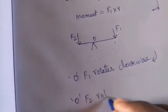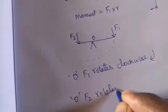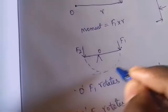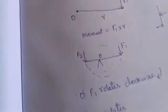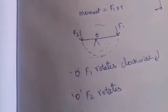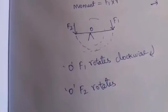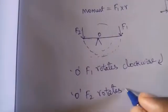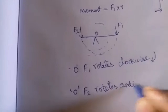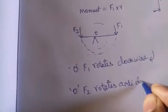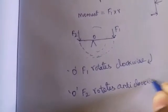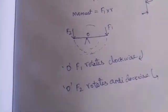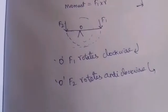F2 rotates in the anticlockwise direction. So F1 produces a clockwise moment and F2 produces an anticlockwise moment.